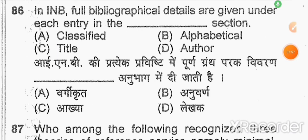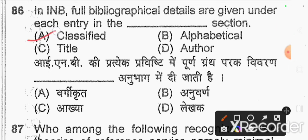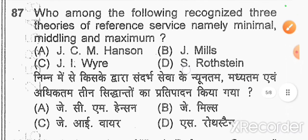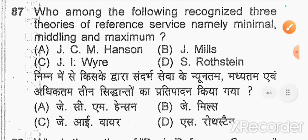Question number 86: in INB, full bibliographical details are given under each entry in the classified section — option A. Question number 87: who recognized three theories of reference service — namely minimal, middle, and maximum? D.S. Dostestan.